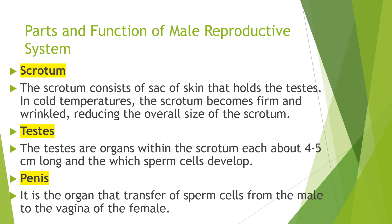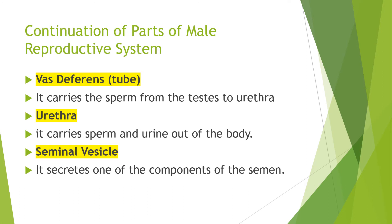The testes, or testis if singular, is the organ within the scrotum, each about 4 to 5 cm long, in which the sperm cell develops. The penis is the organ that transfers sperm cells from the male to the vagina of the female. The vas deferens, also known as the tube, carries the sperm from the testes to the urethra. The urethra carries sperm and urine out of the body. The seminal vesicle secretes one of the components of semen and is one of the three glands of the male reproductive system.